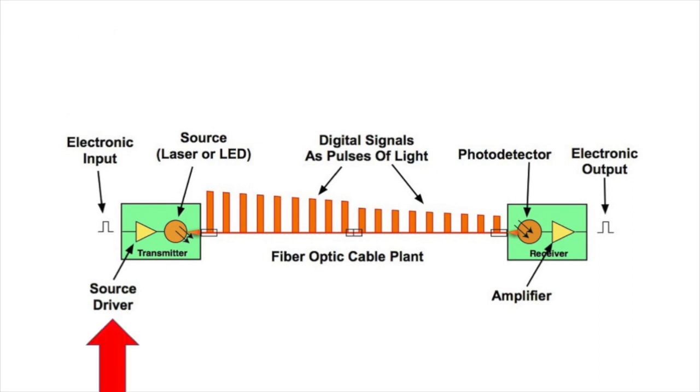Inside the transmitter, the electronic input is converted from a voltage to a current to drive a source. The source is either a laser or an LED, and that converts the electrical signal to an optical signal.